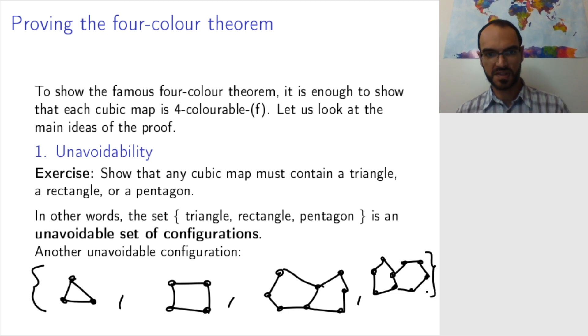The way to prove this from the previous one, I'll just give you an idea, is that assume that each face is assigned a so-called charge, which is six minus the number of edges. So the pentagon has charge one, the seven gon, the heptagon has charge minus one, and so on.